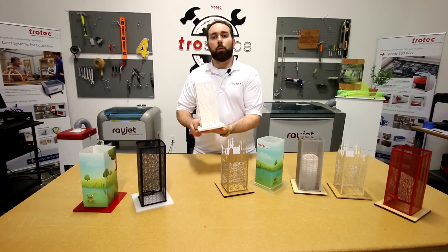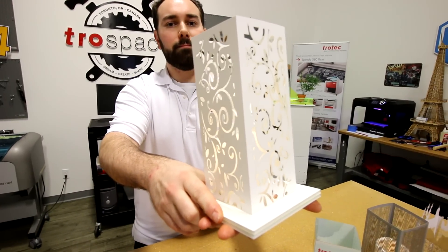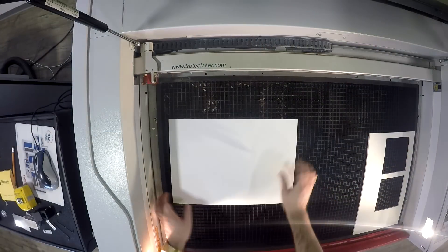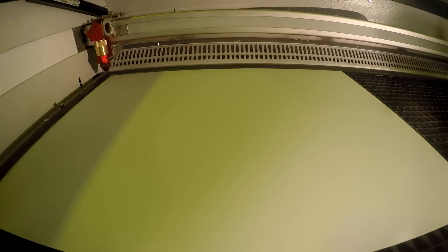For our next lantern we used our synthetic white paper. We took our synthetic white paper and placed it into our Speedy 400. We then cut out our design with score lines.